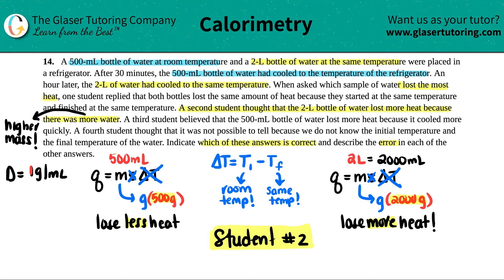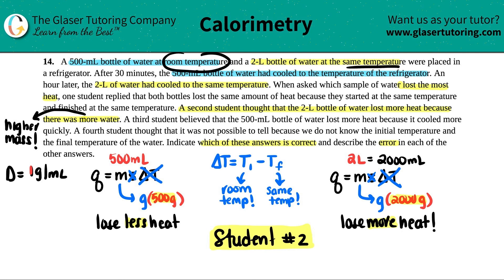The fourth student thought it was not possible to tell because we do not know the initial temperature and the final temperature. We don't know the exact values, but the problem stated that the 500 ml bottle was at room temp and the 2 liter was the same — so initial temp is the same. And the 2 liter bottle cooled to the same temperature as the 500, so final temp is the same. As we discussed, that has nothing to do with the difference in heat lost between the two.